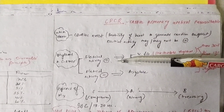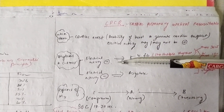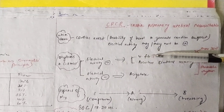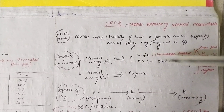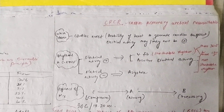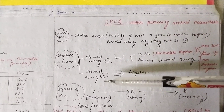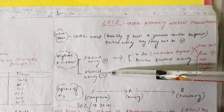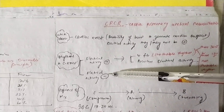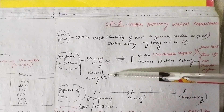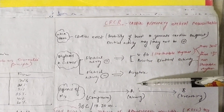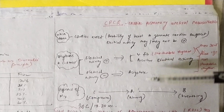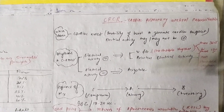There are two conditions in which electrical activity is present and the patient is in cardiac arrest: one is ventricular fibrillation, and the other is pulseless electrical activity. The second condition — when electrical activity is also absent — is asystole. So basically you have to remember ventricular fibrillation, pulseless electrical activity, and asystole.